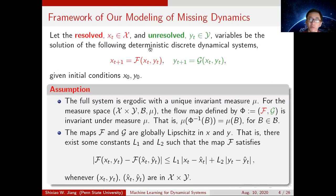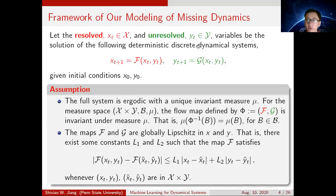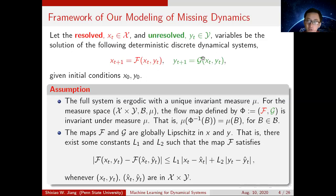We'd like to see the framework of the missing dynamics. We first consider only two variables: one is the resolved variable X(T), and another is the resolved variable Y(T). For resolved X(T), the partial dynamics F is given and is actually known. For unresolved Y(T), the function G is unknown and is not given.